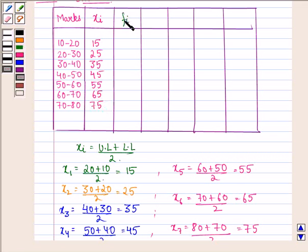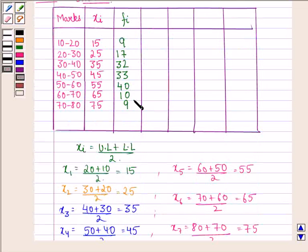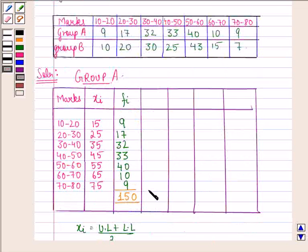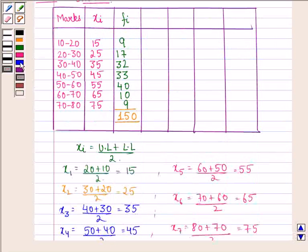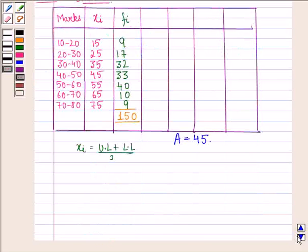Now we write down the fi's for group A. The frequencies for intervals 10–20, 20–30, 30–40 and so on are: 9, 17, 32, 33, 40, 10, and 9. The sum of fi's is 150. We choose the assumed mean A = 45, which is the middle of the xi's. The class width h = 25 − 15 = 35 − 25 = 10.